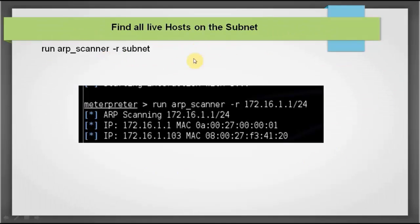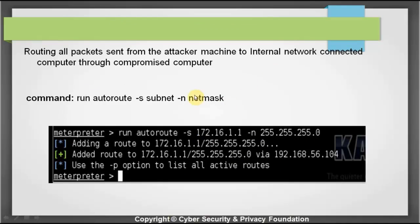Since the intranet cannot be accessed directly, the attacker pivots from the compromised machine. He runs an ARP scanner against the 172.x subnet — the 192 series representing the public internet and the 172 series representing the local private LAN. The ARP scan reveals other machines in that network. He then runs autoroute with the subnet and netmask — for example, autoroute -s 172.16.1.1 with netmask 255.255.255.0 — to forward all packets from his machine through the compromised XP to the entire subnet.